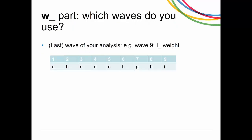Next, think about the waves you are using. If you are looking at a cross-sectional analysis from wave 9, your weight will correspond to I, so it will be I underscore. For longitudinal analysis, think about the last wave — if your analysis ends at wave 9, it will also be I underscore.